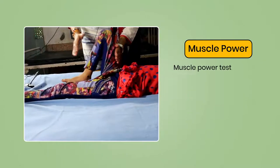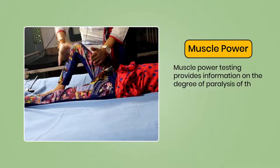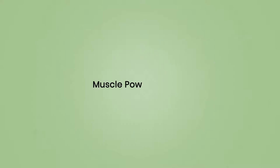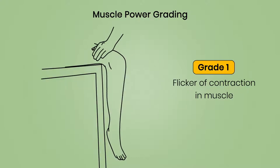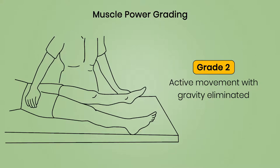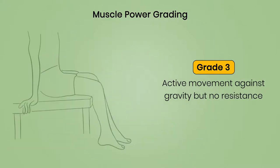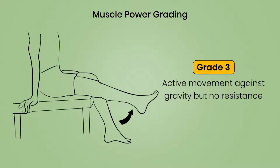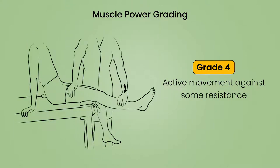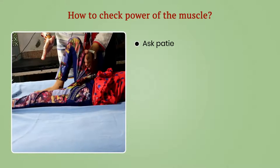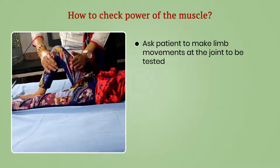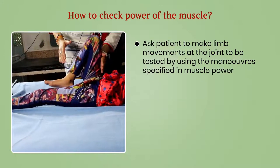Muscle power testing provides information on the degree of paralysis of the muscle or muscle group. Muscle power can be classified into the following grades: Grade 0 — no detectable contraction; Grade 1 — flicker of contraction; Grade 2 — active movement with gravity eliminated; Grade 3 — active movement against gravity but no resistance; Grade 4 — active movement against some resistance; Grade 5 — active movement against good resistance. Ask the patient to make limb movements at the joint to be tested using maneuvers specified in the muscle power grading.